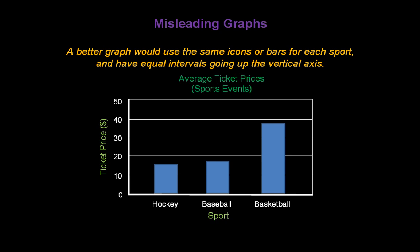A better graph would use the same icons or bars for each sport and have equal intervals going up the vertical axis. Now we can do a fair comparison between ticket prices for the three sports.